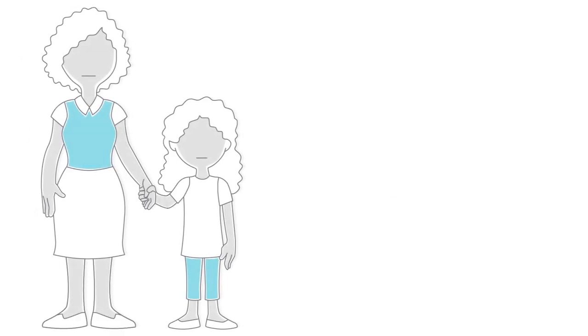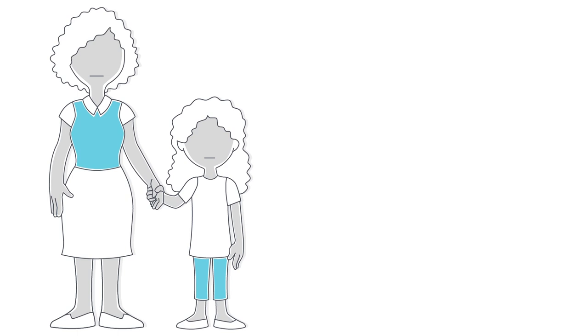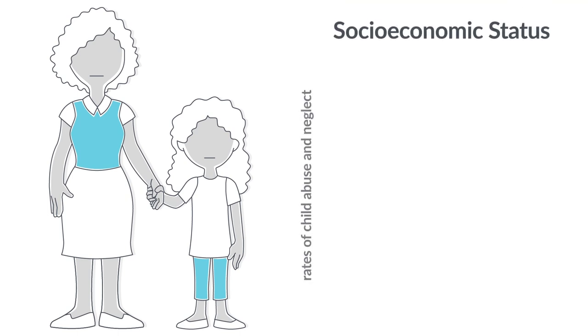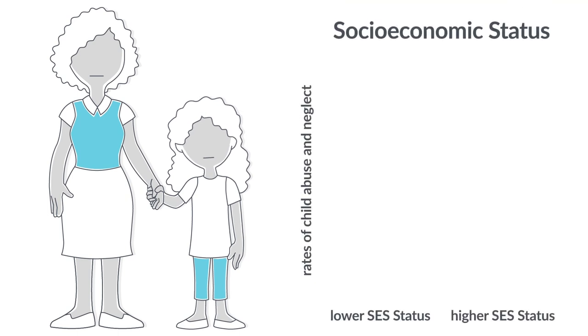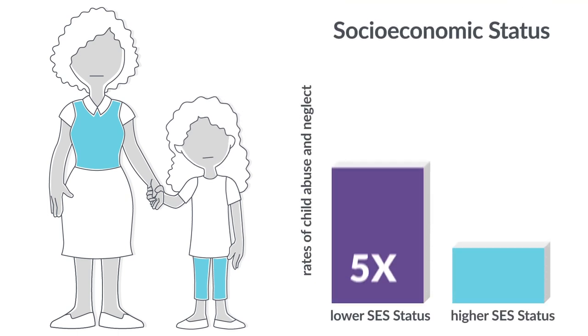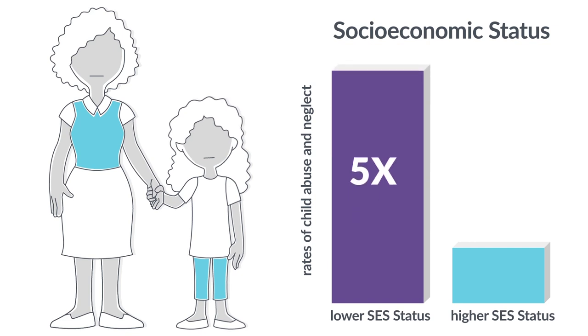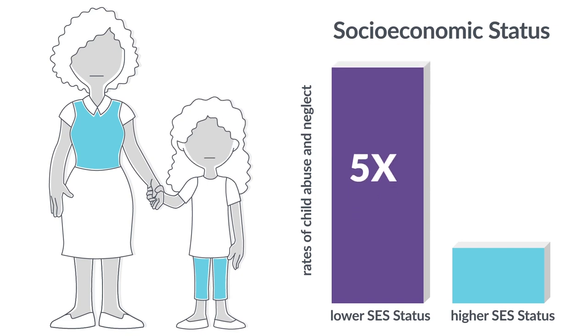For example, children living in families with a low socioeconomic status have rates of child abuse and neglect that are five times higher than rates among children living in families with a higher socioeconomic status.